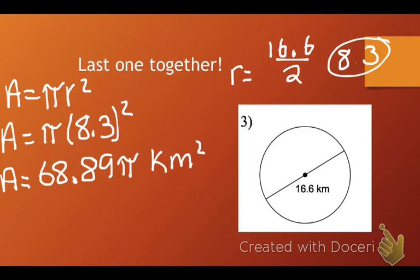Again, no need to round here. Pretty number in terms of pi. So, the last step is to write it out. So, now we need to multiply 68.89 times pi. And, that gives us 216.42.